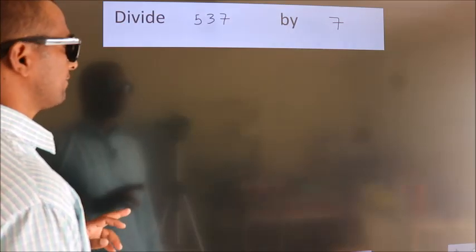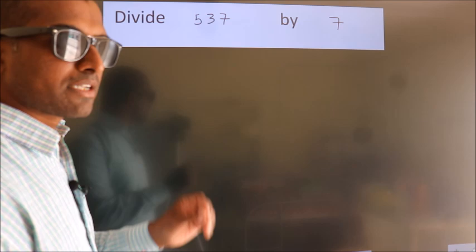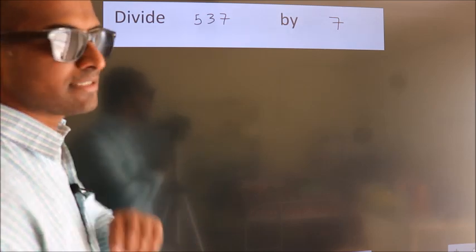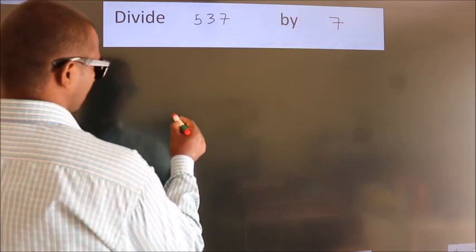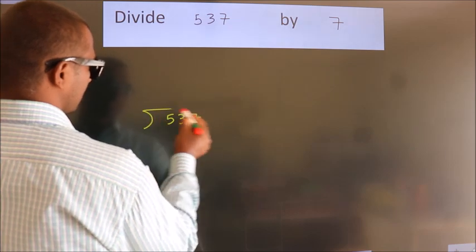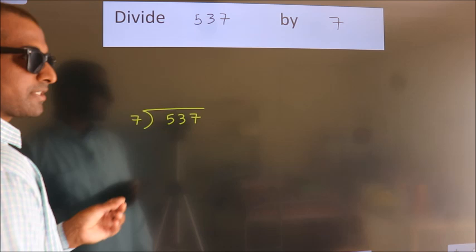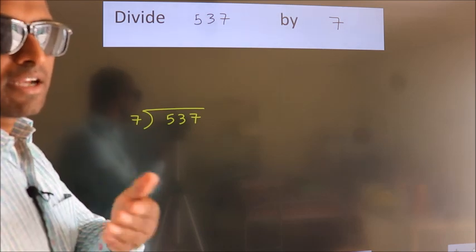Divide 537 by 7. To do this division, we should frame it in this way. 537 here, 7 here. This is your step 1. Next.